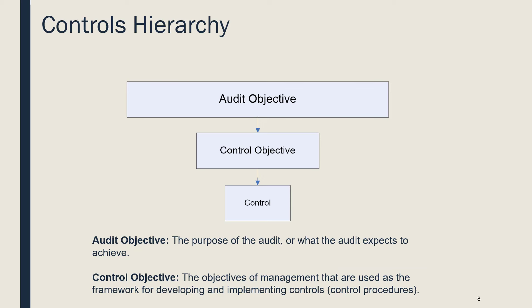Let's discuss the controls hierarchy. This image depicts the hierarchy of controls. A control typically exists to meet a control objective. An example of a control objective could be: controls provide reasonable assurance that access to the accounts payable system is limited to authorized individuals. Or, controls provide reasonable assurance that access to make changes to financial systems is limited to authorized individuals. In order to meet these control objectives, controls such as user access controls, password controls, and privileged controls are implemented.